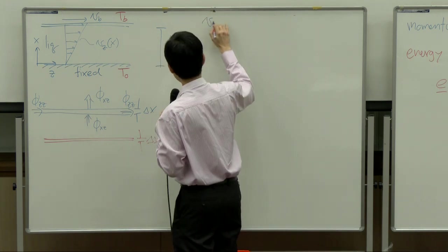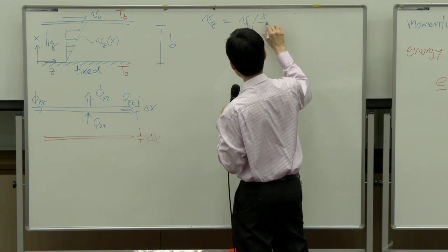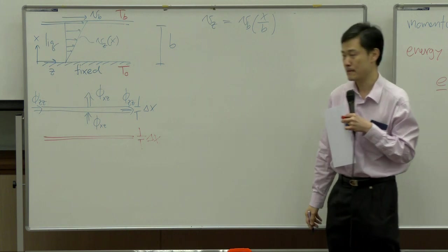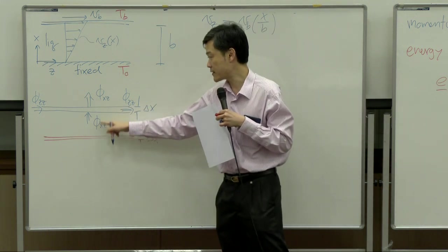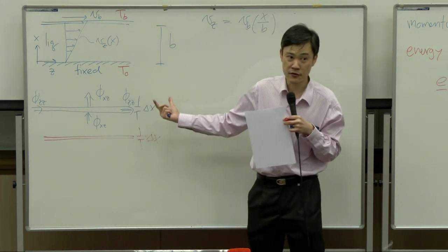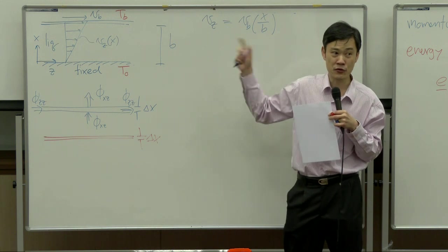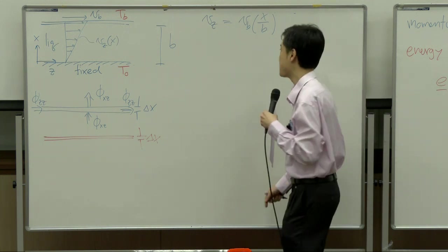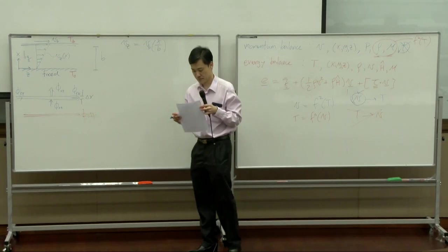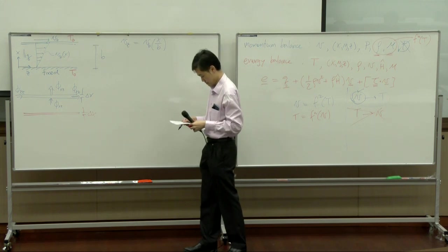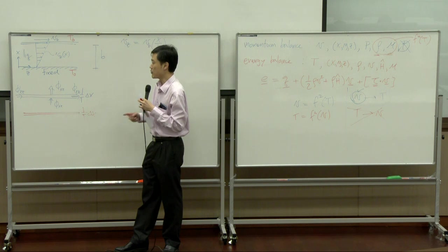So the velocity Vz = Vb · (x/b) is already known from the momentum balance. Now we can start the energy balance. For energy balance, we consider the red shell. There will be combined energy flux E going in and going out in the X direction, since temperature changes with respect to X. The combined flux E is a vector with three components; we want the X-component, Ex.